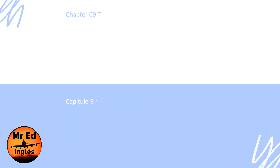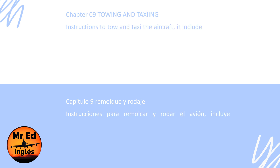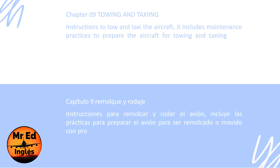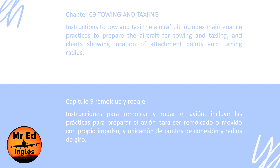Chapter 9: Towing and taxiing. Instructions to tow and taxi the aircraft. It includes maintenance practices to prepare the aircraft for towing and taxiing, and charts showing location of attachment points and turning radius.